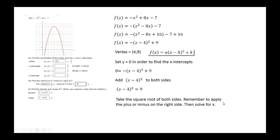Take the square root of both sides and remember to apply the plus or minus, then solve for x. So we'll square root both sides and make sure that we put the plus or minus on the right. Taking the square root, we find x minus 4 equal to plus or minus 3.